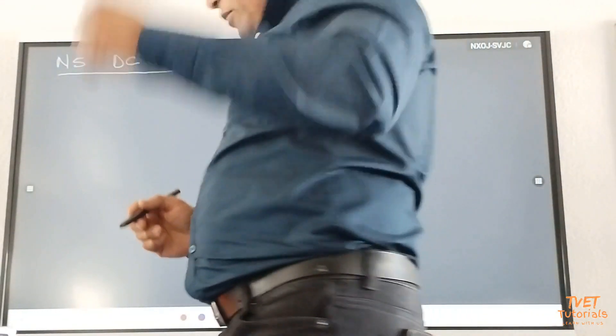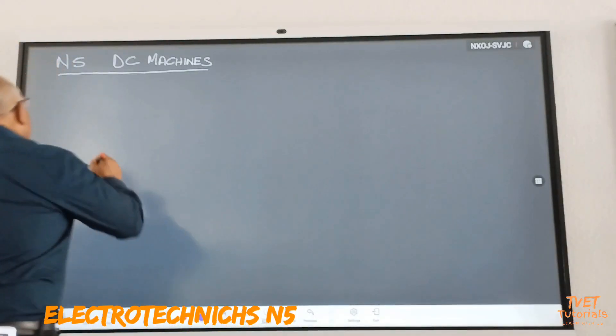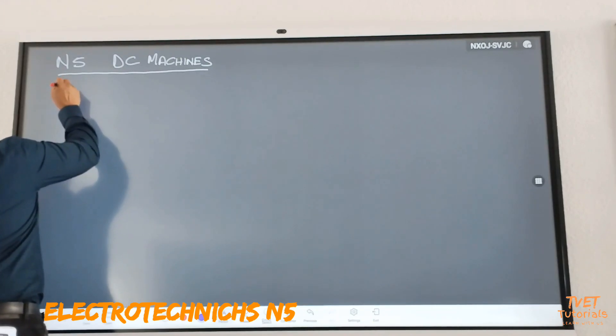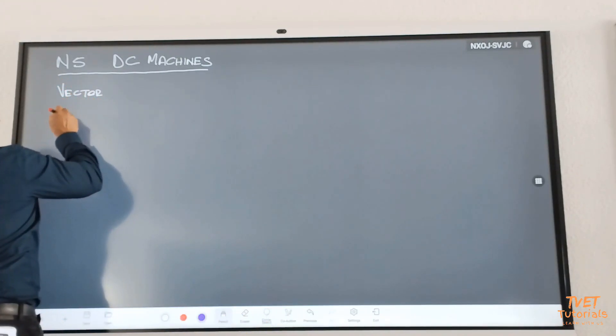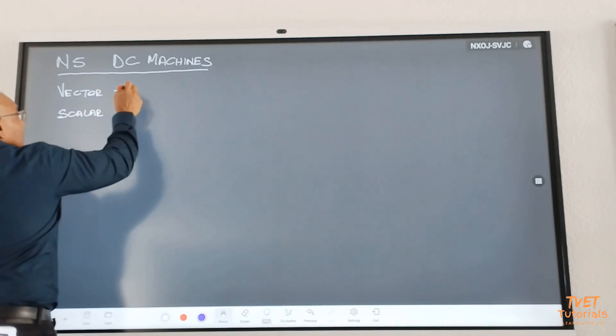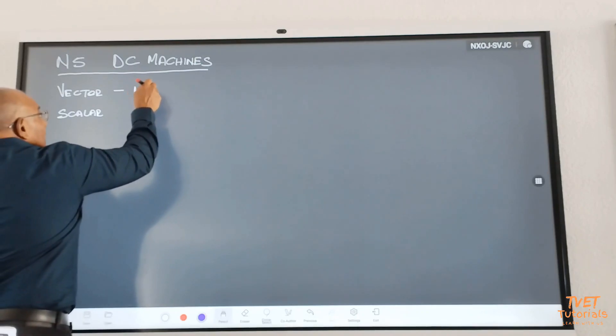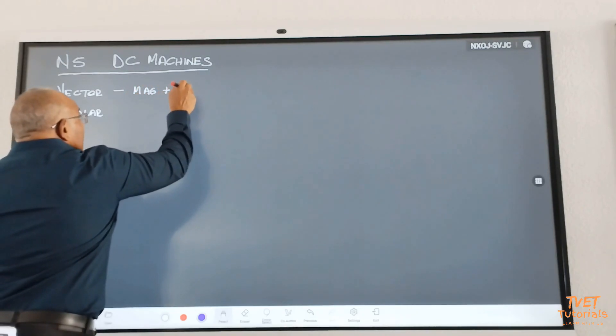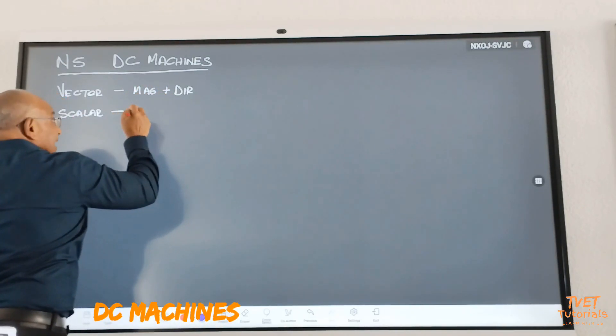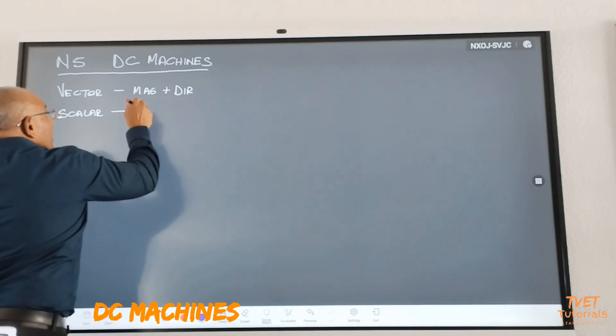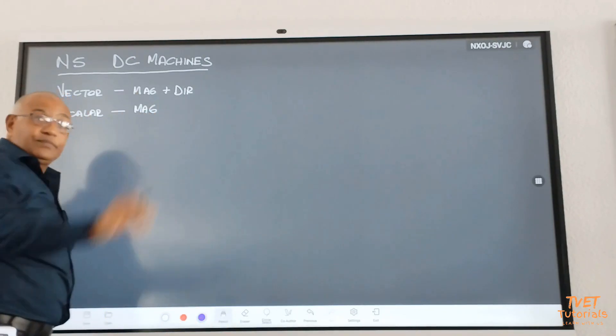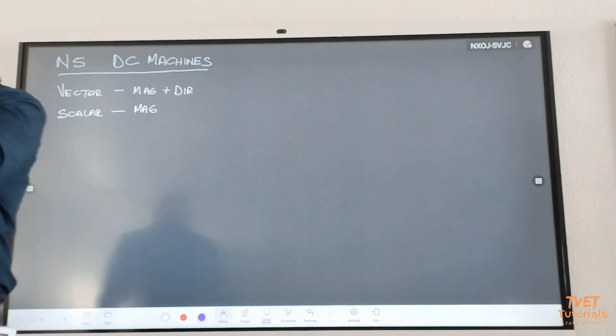I want the students to understand the following. What is the difference between a vector quantity and a scalar quantity? You all know this, isn't that so? So a vector quantity has magnitude and dimension. And you'll find the scalar quantity has simply magnitude. I'm just dealing with this kind of thing.